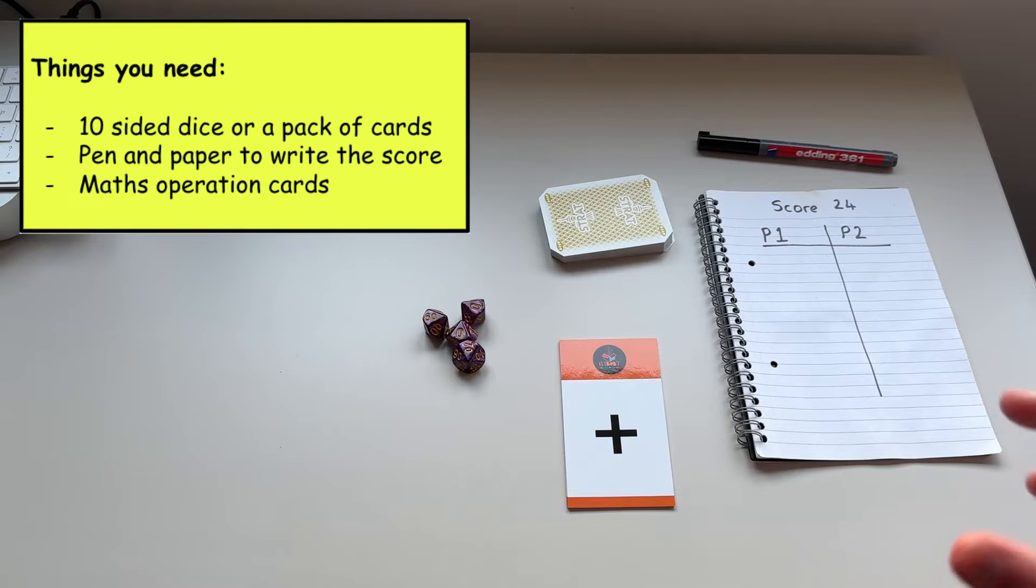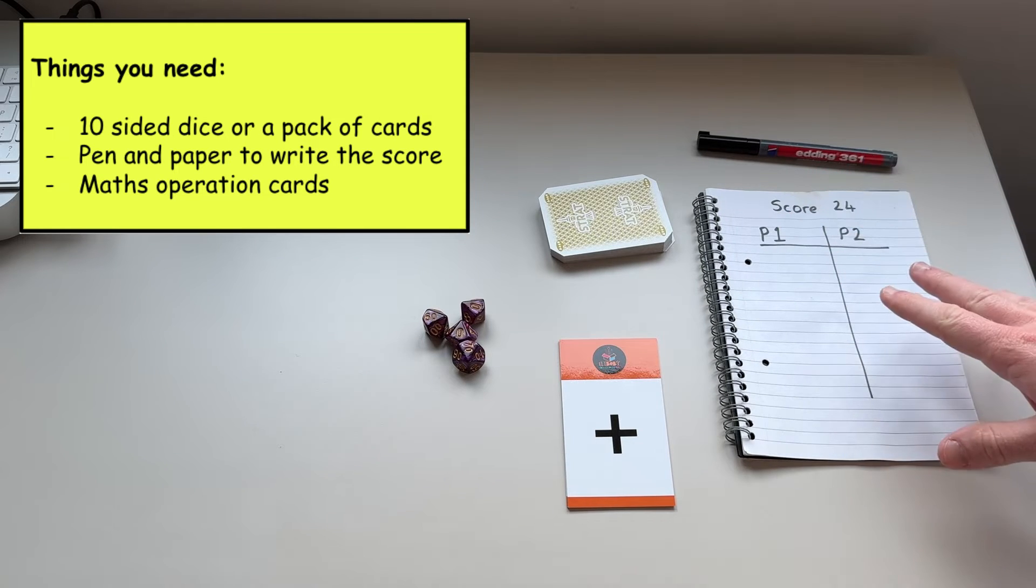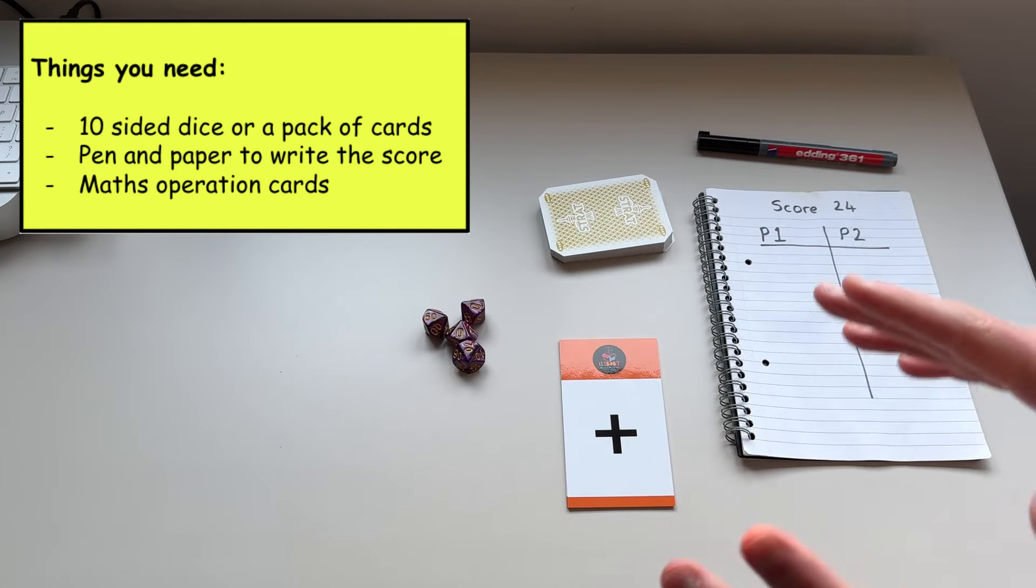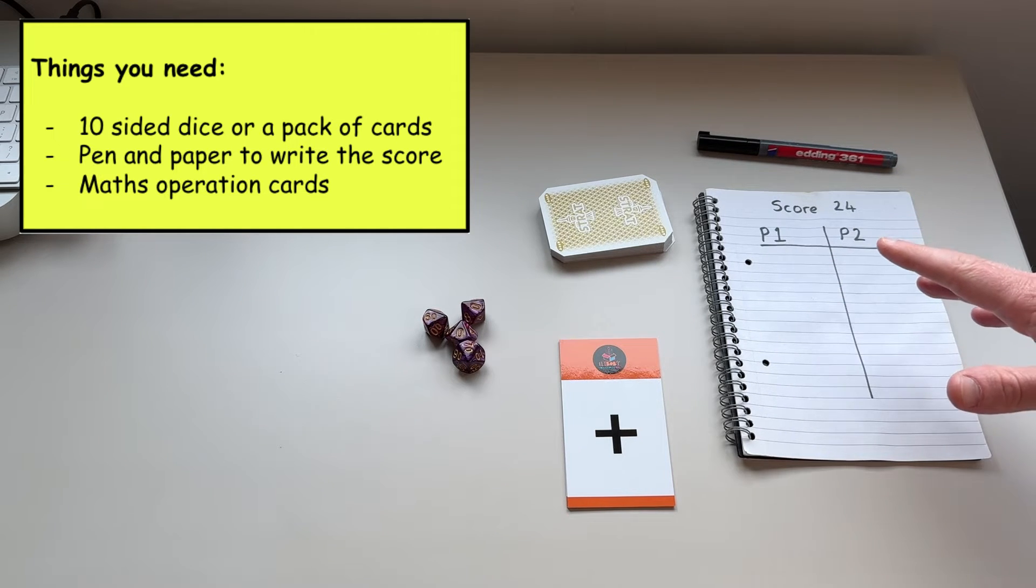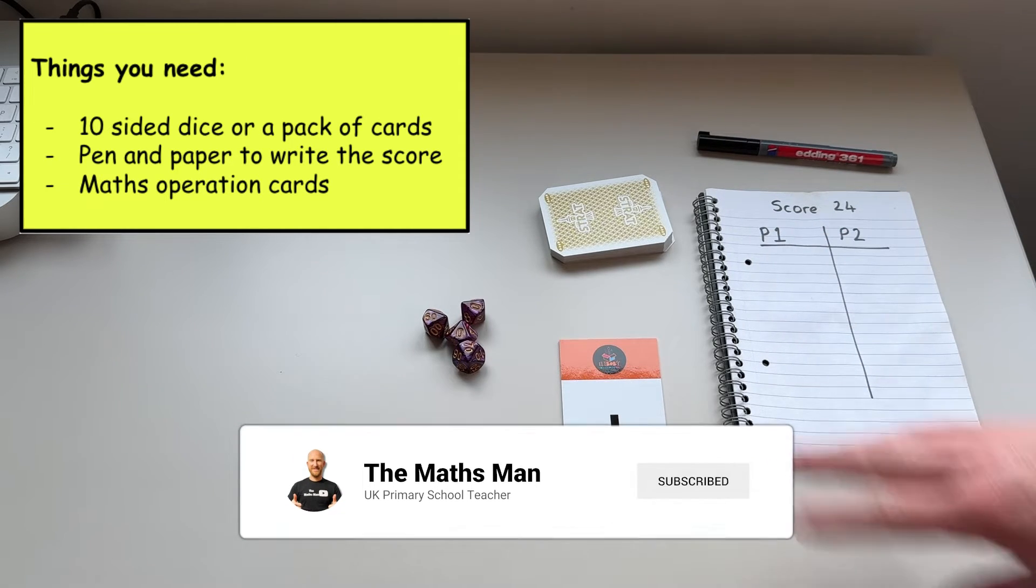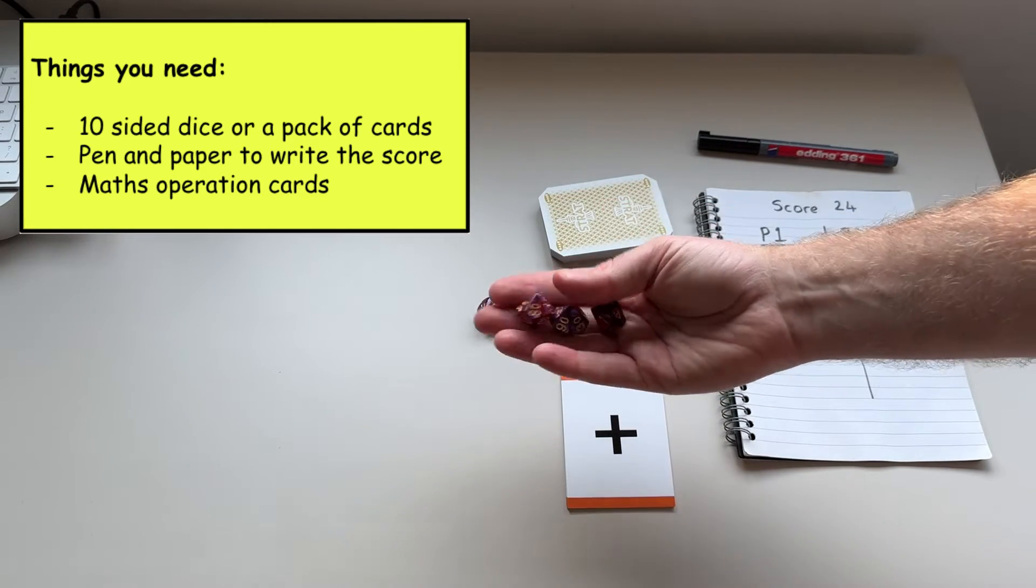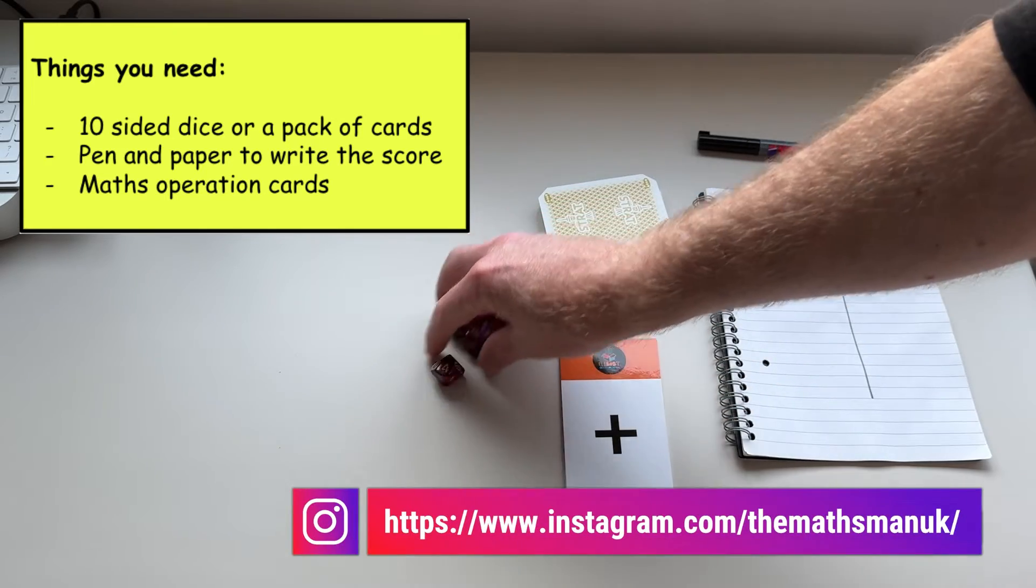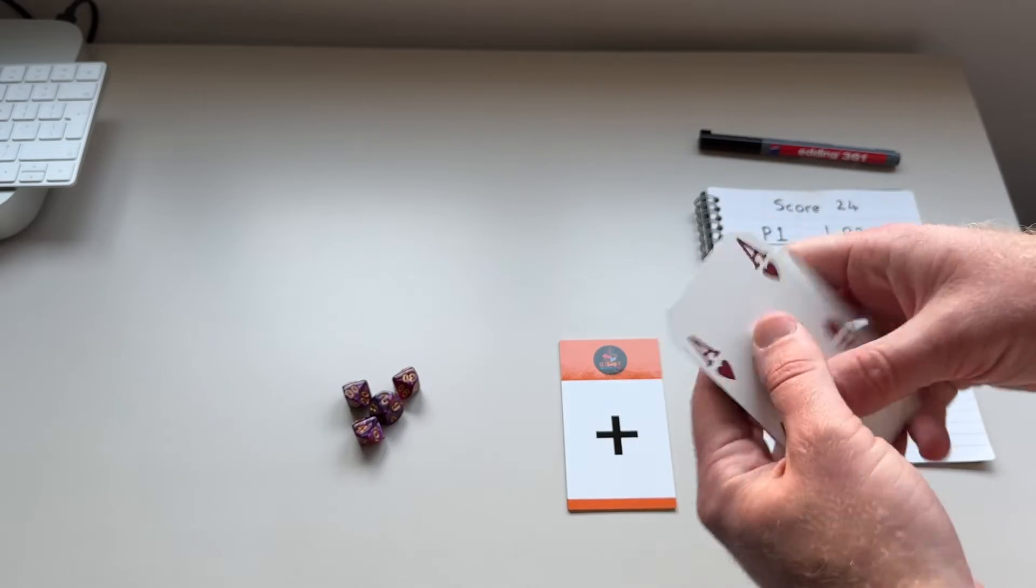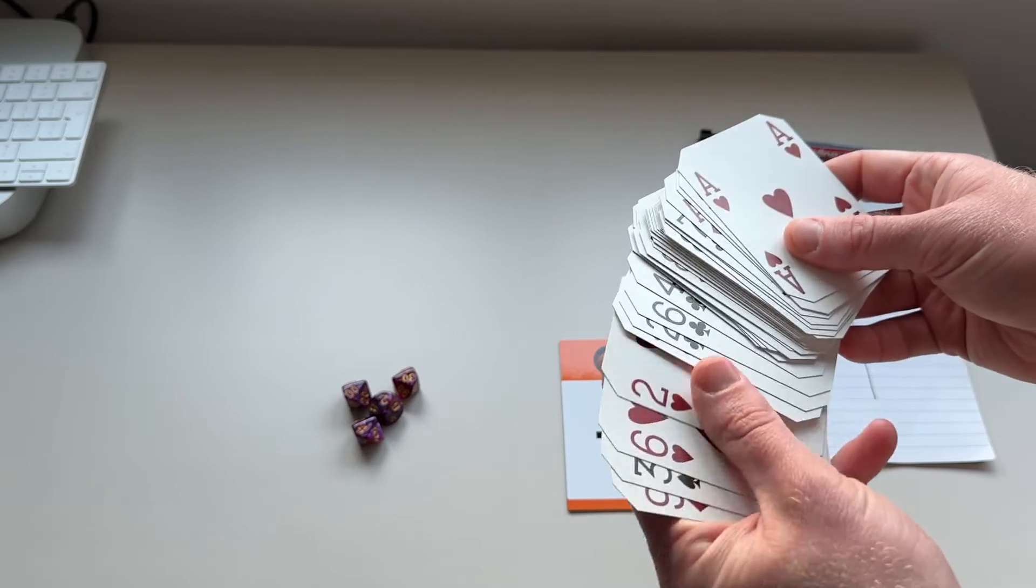So to play Score24 you're going to need a pen and a piece of paper to write the score down. In this video I'm going to be showing you how to play with just two players, but this is actually a game for an unlimited amount of players, so you can play with ten players if you really want to. You're going to need ten-sided dice, which I know a lot of people might not have at home, or you're going to need a pack of cards with all of the picture cards taken out. This is the way that I am going to be playing in this video today.